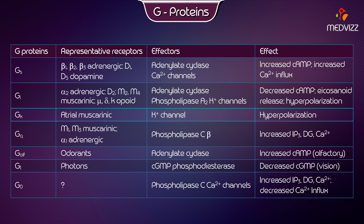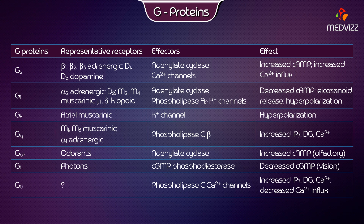G-Protein Gk: representative receptors are atrial muscarinic. Effectors are potassium channels, and the effect is hyperpolarization. G-Protein Gq: representative receptors are M1 and M3 muscarinic, and alpha-1 adrenergic. Effectors are phospholipase C-beta, and the effect is increased IP3, DAG, and calcium.